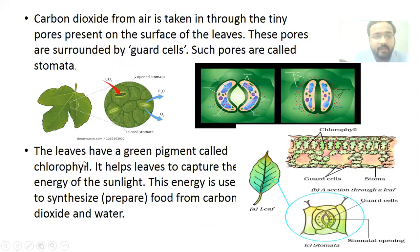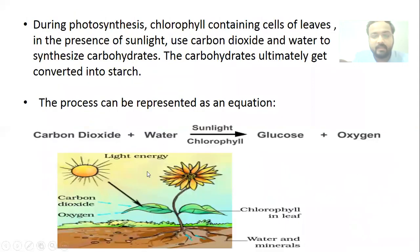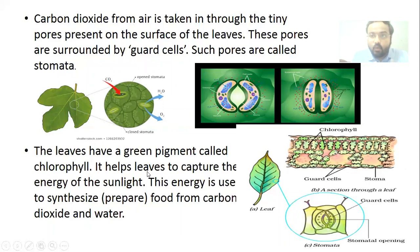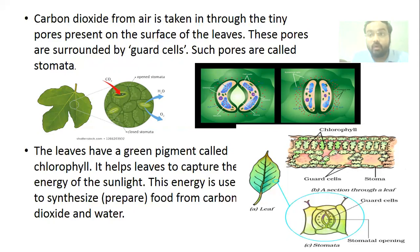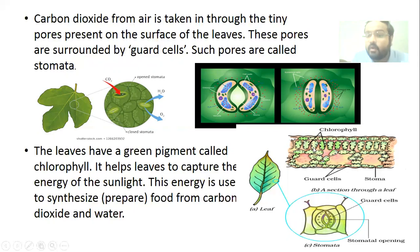The leaves have a green pigment called chlorophyll, which helps the leaves to capture the energy of sunlight. This energy is then used to synthesize food from carbon dioxide and water. The entire process of photosynthesis takes place inside the chlorophyll.